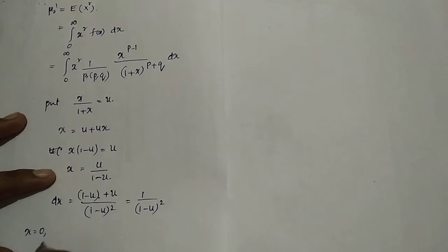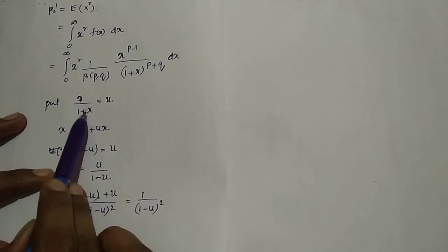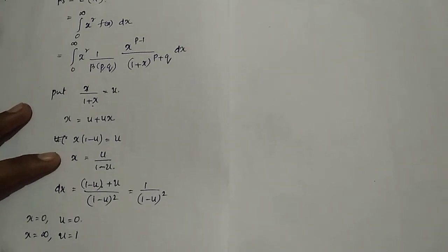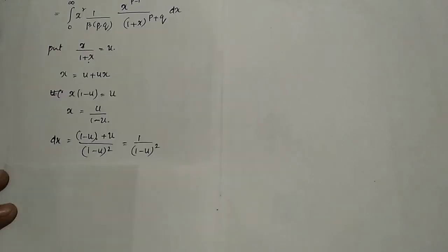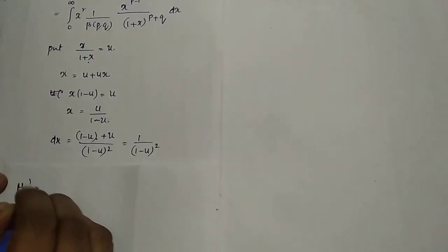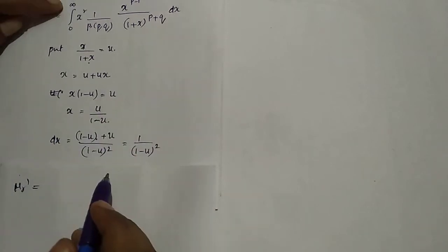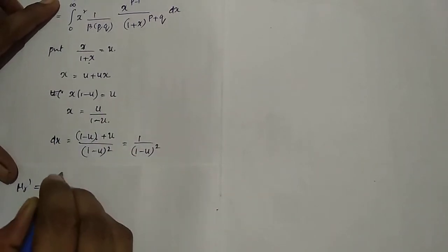The limits also change with the substitution. When x = 0, u = 0. When x → ∞, u → 1 (since x/(1+x) → 1). So x: 0 to ∞ changes to u: 0 to 1. Therefore, μ'r = integral from 0 to 1 (with the substituted values).